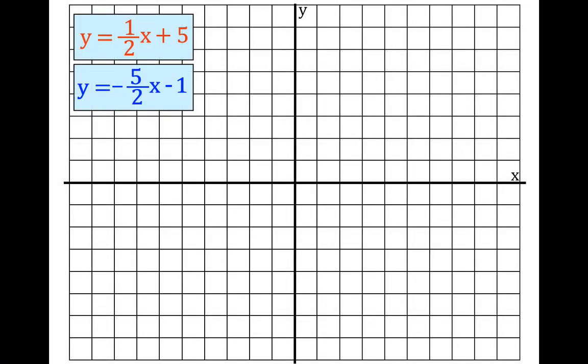We have these two equations: y equals one-half x plus five, and y equals minus five-half x minus one. Those are both equations for a line, and we want to find the one point — the one x and y coordinate — that is a solution for both of those linear equations.